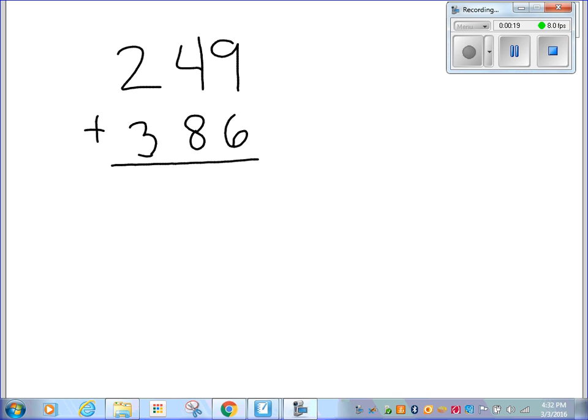And in the traditional algorithm, we would start with the ones, add those numbers, carry the one if we need to make a new ten. But let's talk about the show all totals method, because that's a little bit different than what we've been doing.